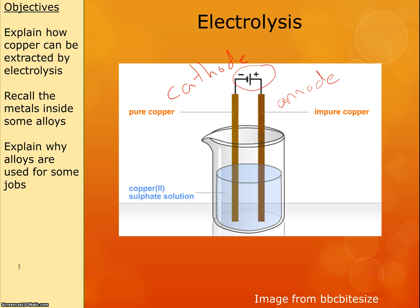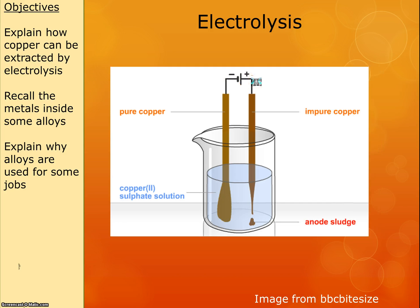We then apply a current, so electrons flow from the negative, through the liquid, back up the other side and up to the positive. After it's been going for a while, what we'll find is that our pure copper — the cathode — will have gotten bigger, because more copper has been moved to that side. And the impure copper will have lost some of it, so the impure anode will have got smaller, and there'll be a bit of sludge at the bottom.